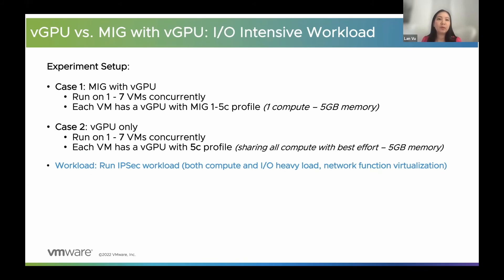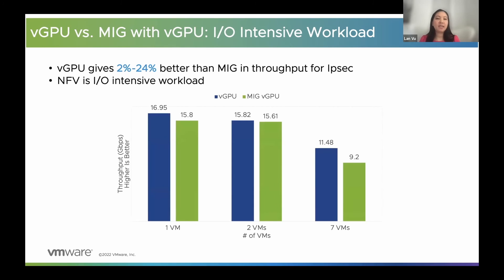In the next set of experiments, we run an entirely different type of workload — not just heavy on compute, but also IO-intensive. We choose an IPv6 workload, which is a network function virtualization application. We run this workload from 1 to 7 VMs concurrently, using the 5C profile for vGPU and the 1G.5C profile for MIG — the same amount of memory per VM. Here you can see the result is a contrast to the previous experiments. vGPU consistently performs better compared to MIG vGPU. The performance metric is throughput in Gbps, and the higher the better. For this type of workload, vGPU consistently wins.